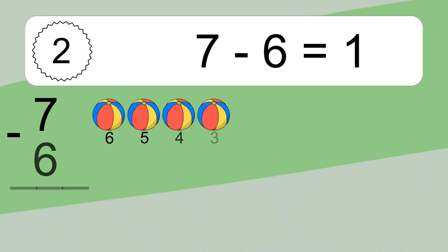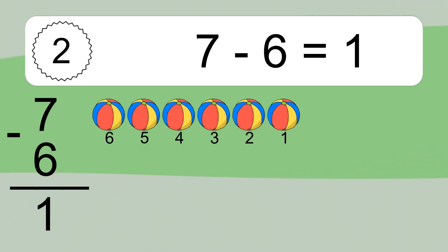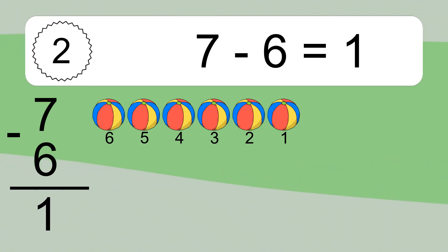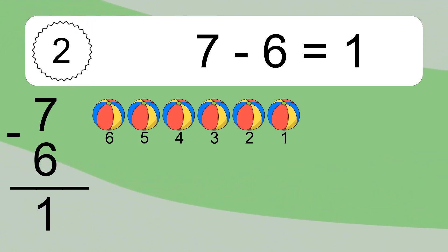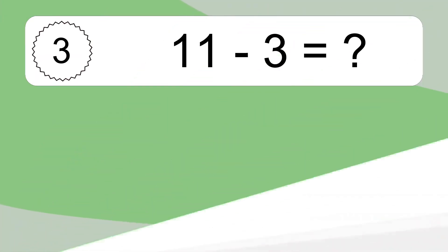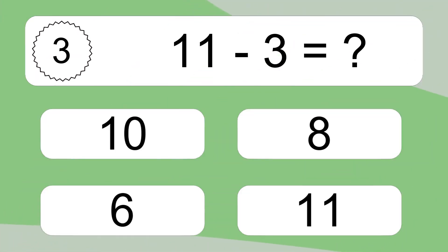7 minus 6 equals what? 7 minus 6 equals 1. Let's count it: 6, 5, 4, 3, 2, 1.